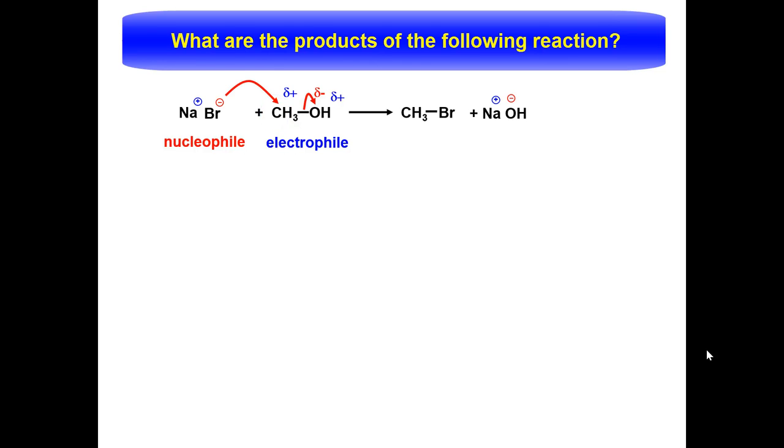Now negative goes to positive. Draw an arrow from the negatively charged bromide ion to the partially positively charged carbon. This shows bond formation between the bromide ion and the carbon.